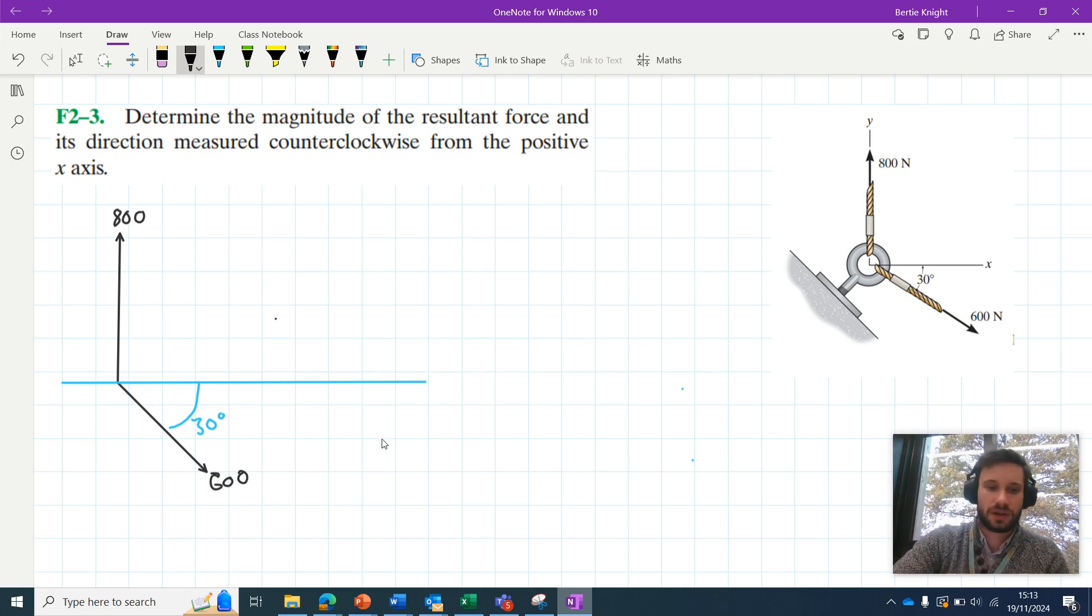As we've done with previous problems, we'll go ahead and resolve horizontally and vertically. So we can say that the sum of the forces in the x are equal to—well, the 800N force doesn't have a horizontal component, so we can ignore that. The 600N force, its horizontal component will be 600 cos 30°, which when we plug into our calculator, we find is equal to 519.6.